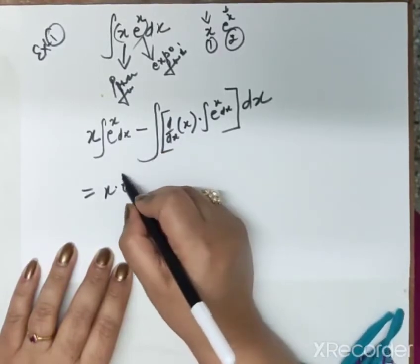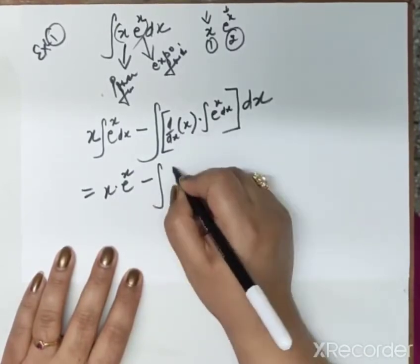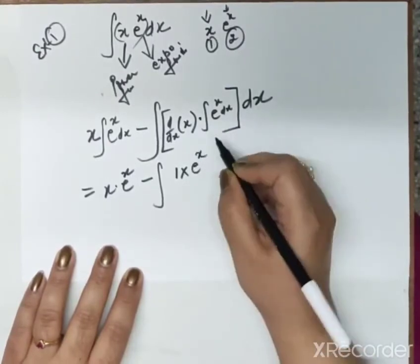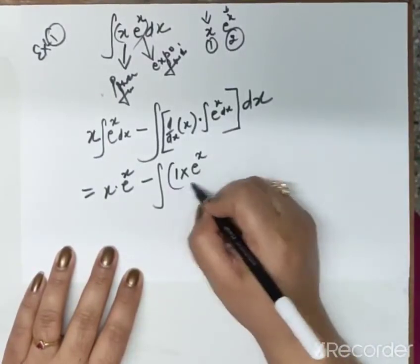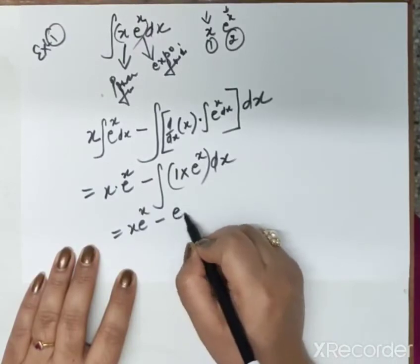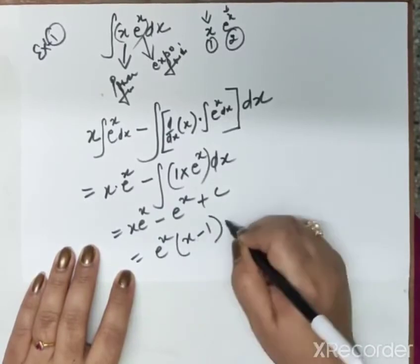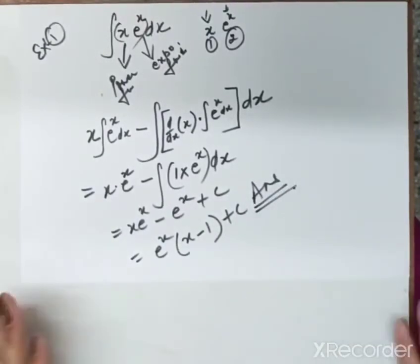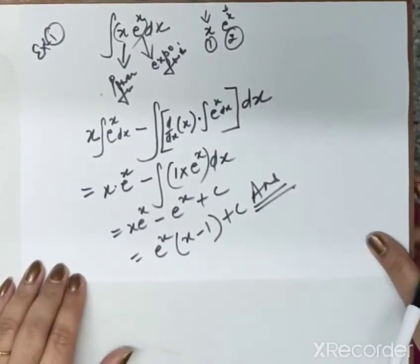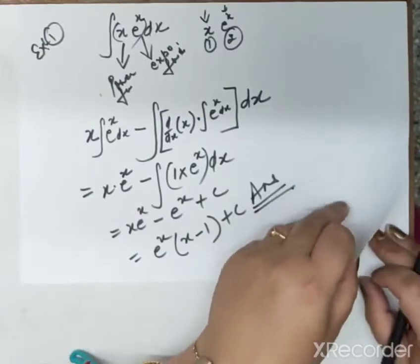Solving: integration of e^x is e^x, so we have x · e^x. Then derivative of x is 1, and integration of e^x is e^x. So this becomes x · e^x − ∫ 1 · e^x dx = x · e^x − e^x + c. Taking e^x common: e^x (x − 1) + c. This will be our answer, solved by integration by parts.